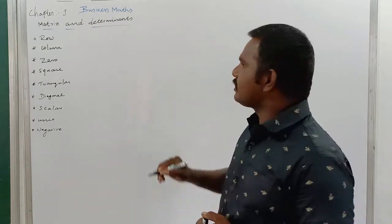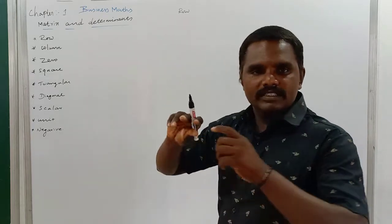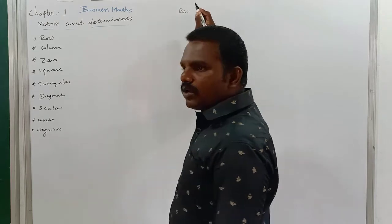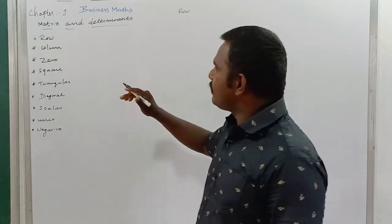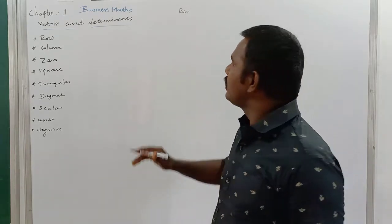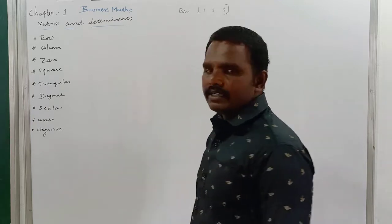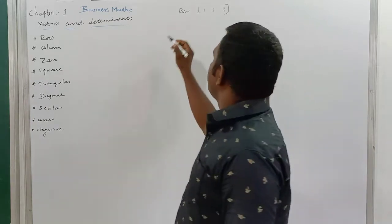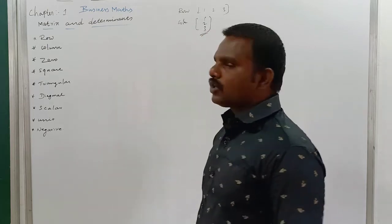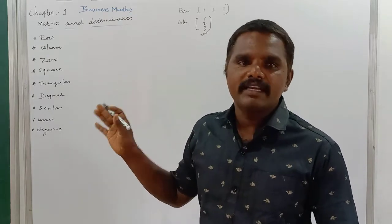The first type is row matrix. Row matrix means numbers arranged in a single row — that is called a row matrix. Column matrix means numbers arranged in a single column. For example, a row matrix has one row with elements one, two, three. A column matrix has elements arranged vertically: one, two, three. We already learned these different types of matrices in lower classes.